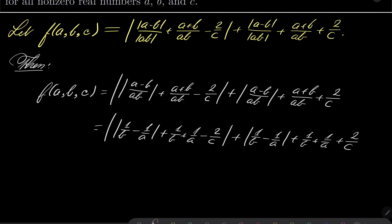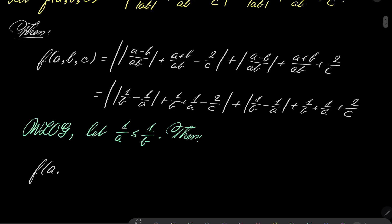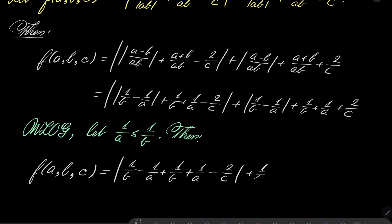Our expression is completely symmetric with respect to a and b, because |x| = |-x|. So without loss of generality, suppose 1/a ≤ 1/b. Then we can write f(a, b, c) as |1/b - 1/a + 1/b + 1/a - 2/c| + |1/b - 1/a + 1/b + 1/a + 2/c|.